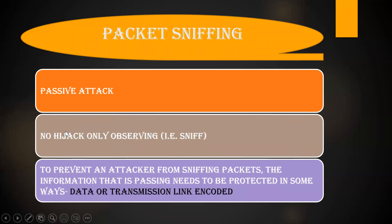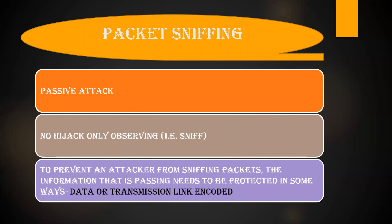It checks whether any confidential data is being shared. When packet sniffing is happening, you cannot simply detect the attacker. You have to be more intelligent than the hijacker and come up with some preventive measures, so that the data can be protected and the attacker cannot observe confidential messages. That can be done in two ways: data encoding and transmission link encoding.